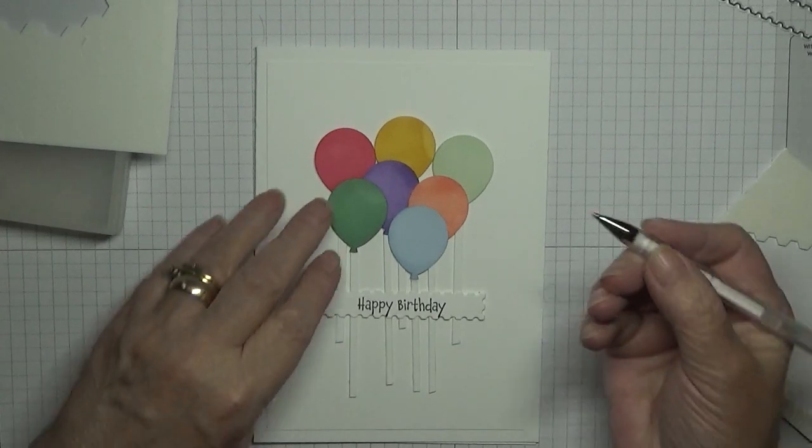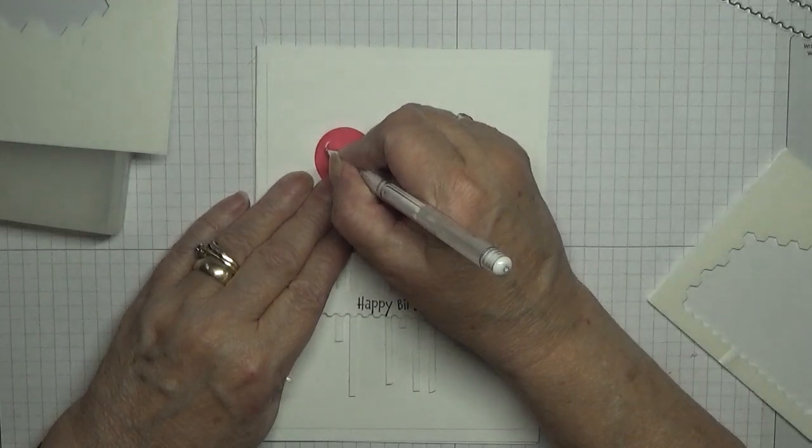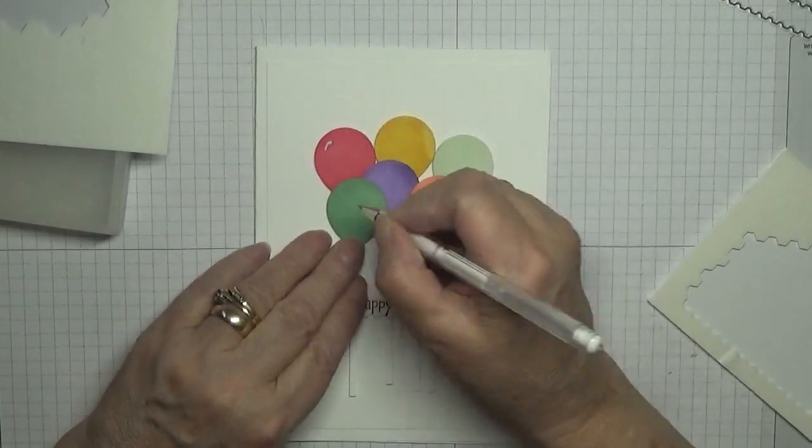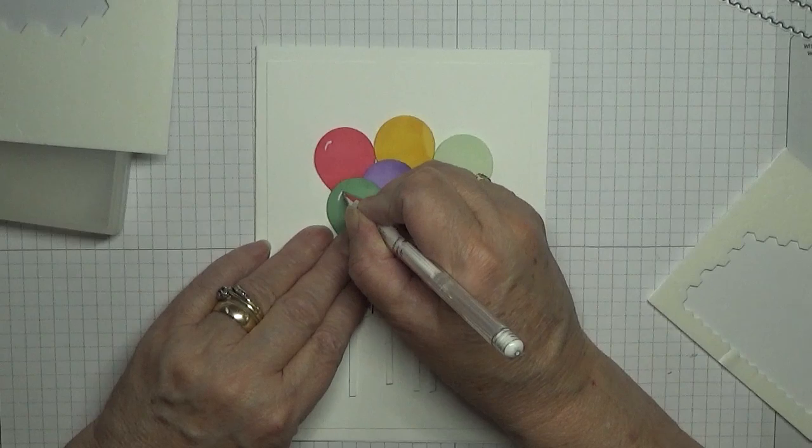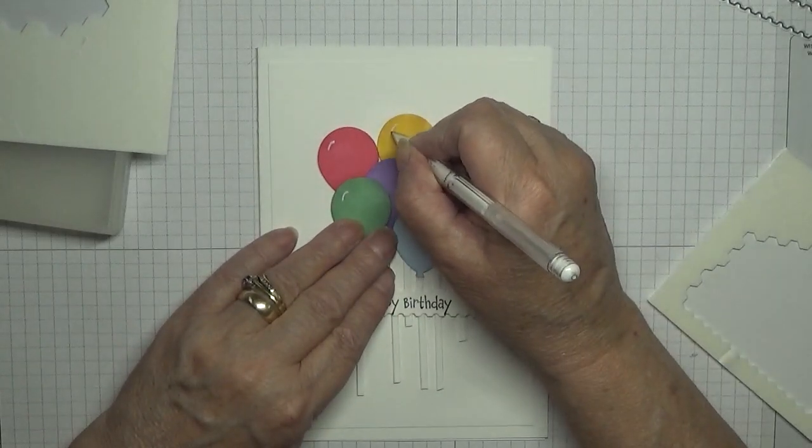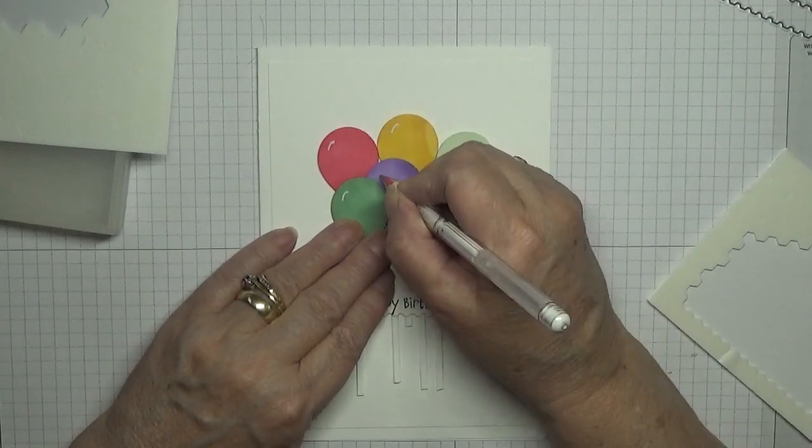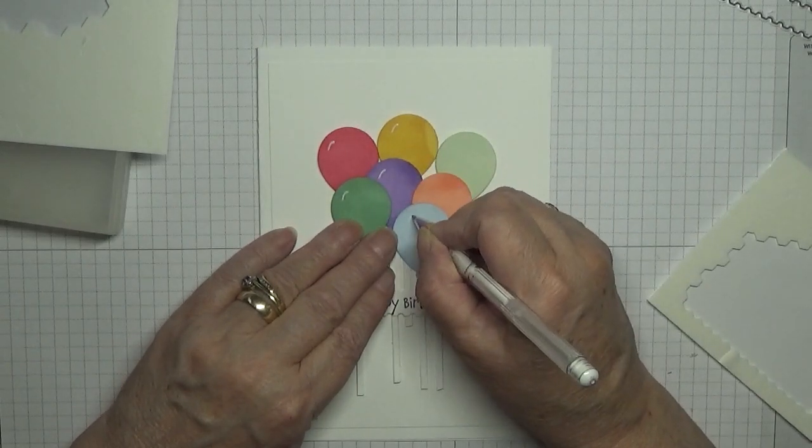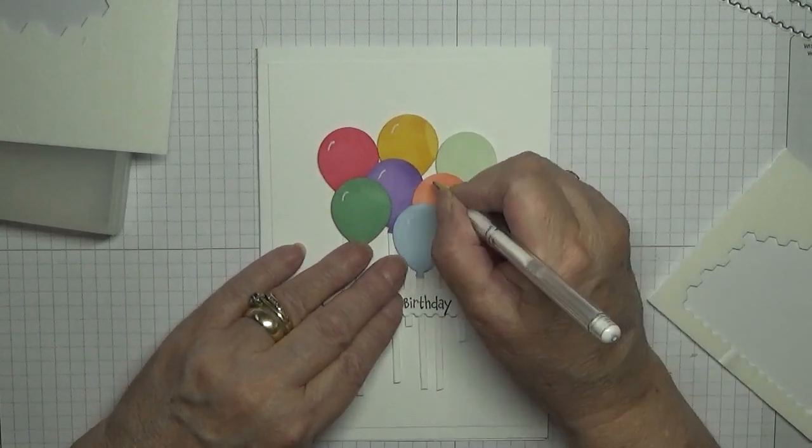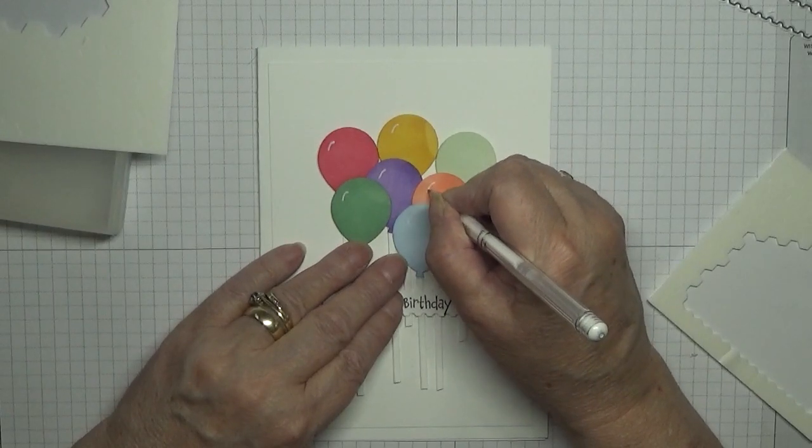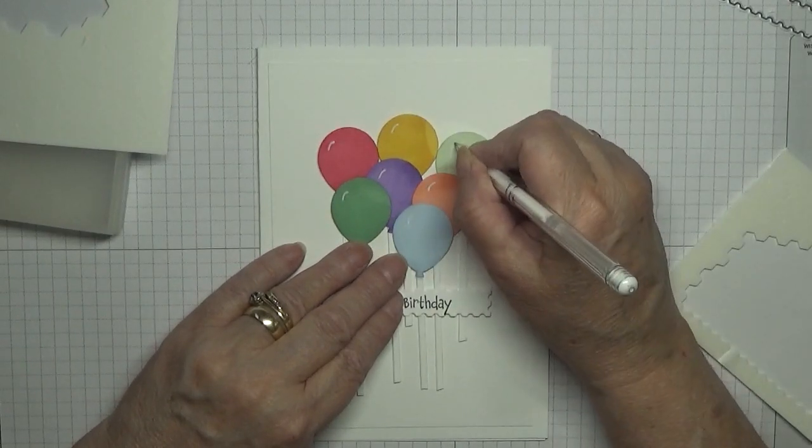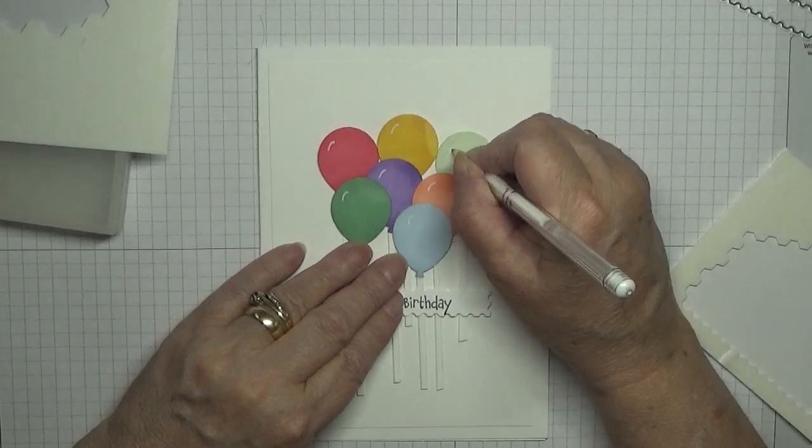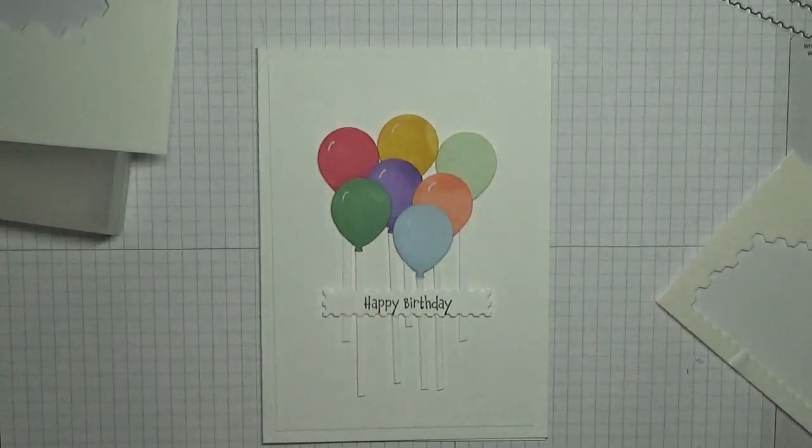All right. With our white gel pen, we're going to draw a curve on each balloon just so it looks like it's shiny. There we are.